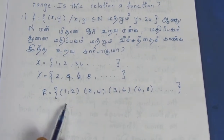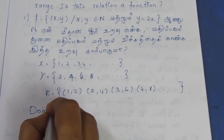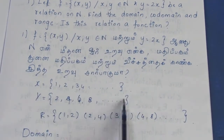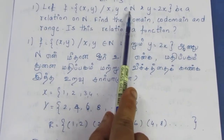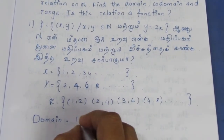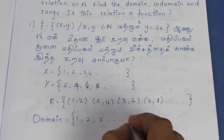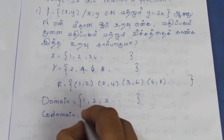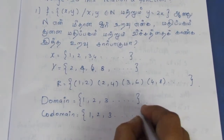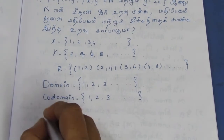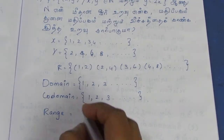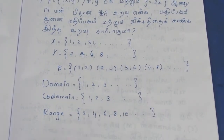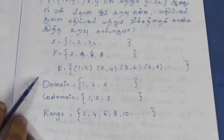So this is the relation. Domain: all natural numbers. The codomain is natural numbers, where x,y belongs to N. Range is the y-order values: 2, 4, 6, 8, 10... all even numbers. So domain is all natural numbers, codomain is natural numbers, and range is all even natural numbers.